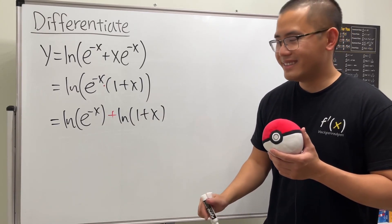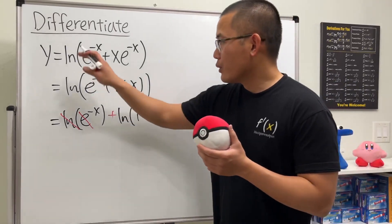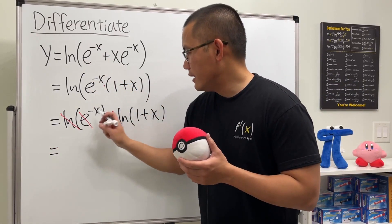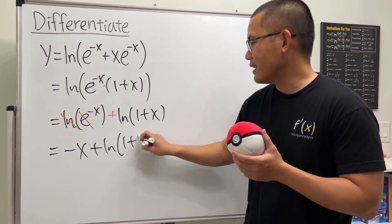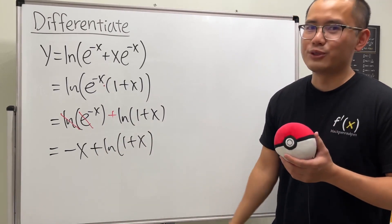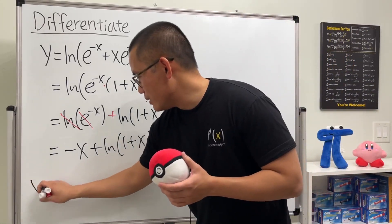You know what else is really good? Yeah, ln and e cancel each other out. So the original function is just negative x plus ln of 1 plus x after we have done all the algebra. Okay, now let's look at this and do the derivative.